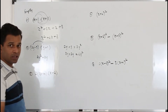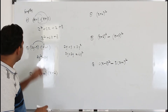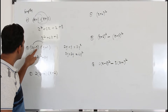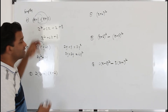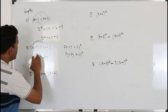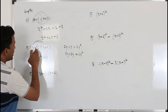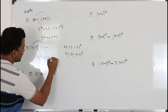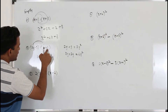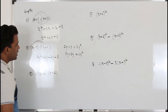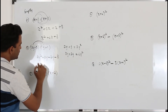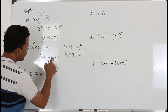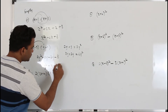Here there's another mistake you might tend to make. When you take the second term, always take it with its sign. Here it's negative 3. Negative 3 times y, negative 3 times positive 1. Then simplify the like terms: 2y square, 2y minus 3y — 2 minus 3 is minus 1 — minus 3.